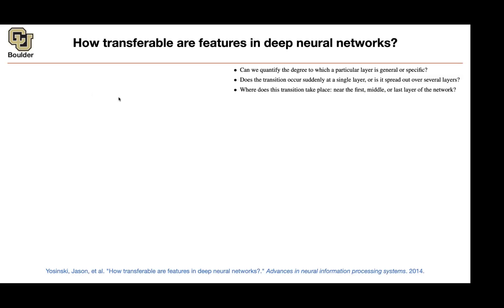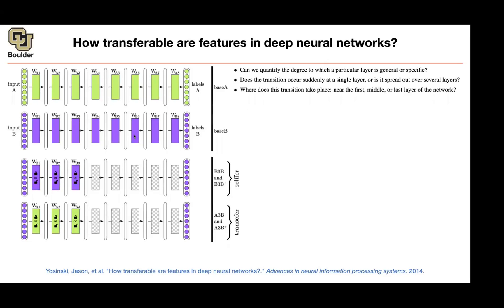The paper asks: Can we quantify the degree to which a particular layer is general or specific to a particular dataset? If there is a transition, does it occur suddenly as a single layer or spread out over several layers? And where does this transition take place — near the first layers, the middle layers, or the last layers of the network? To answer those questions, you can approach it systematically by dividing your dataset.